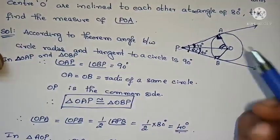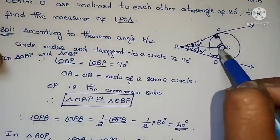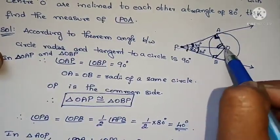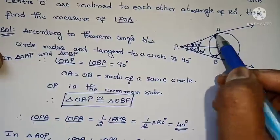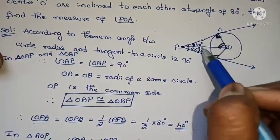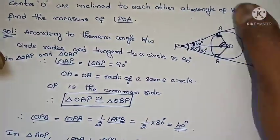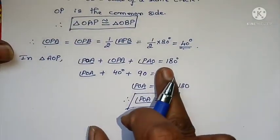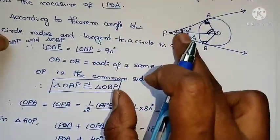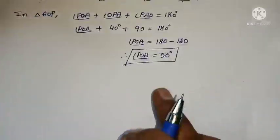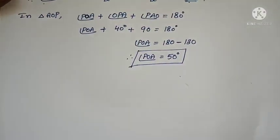Since the two triangles are similar, the total angle is 80 degrees and it splits equally, giving 40 degrees each. In triangle OAP, angle P plus angle O plus angle A equals 180 degrees. This gives 40 plus 90 plus angle POA equals 180, so angle POA equals 50 degrees.